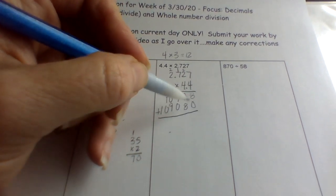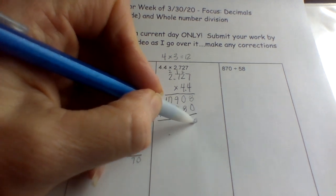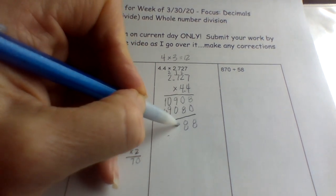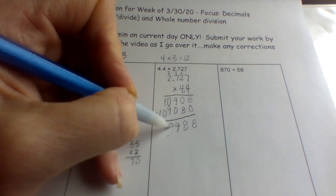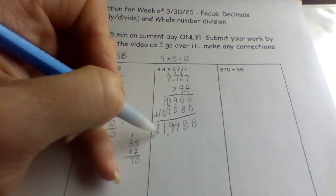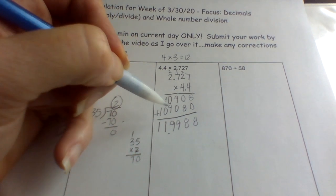So then I'm just going to go down on the right. So eight plus zero is eight. Zero plus eight is eight. Nine plus zero is nine. Zero plus nine is nine. One plus zero is one. And one plus, this is just my one I bring down.